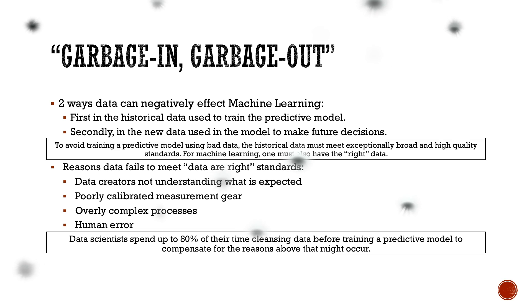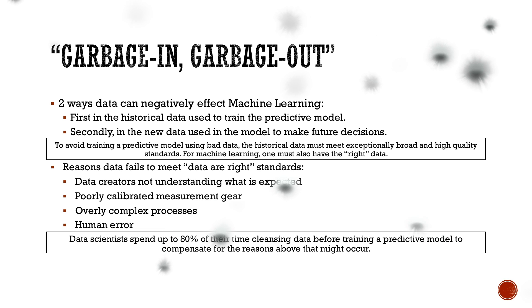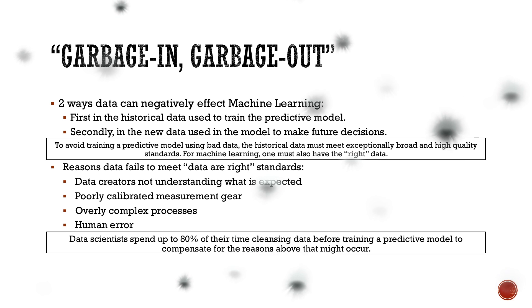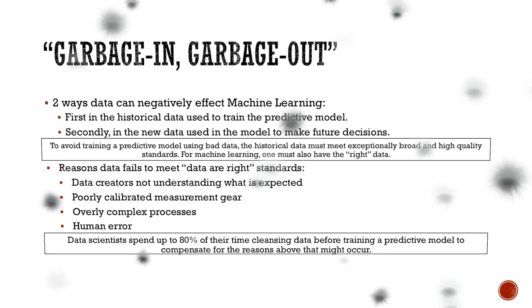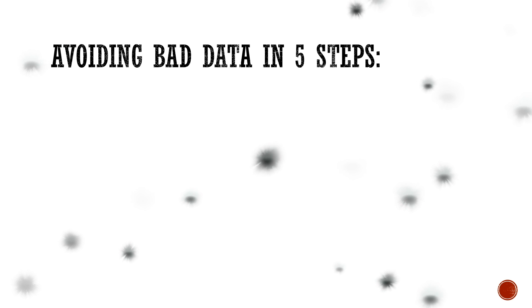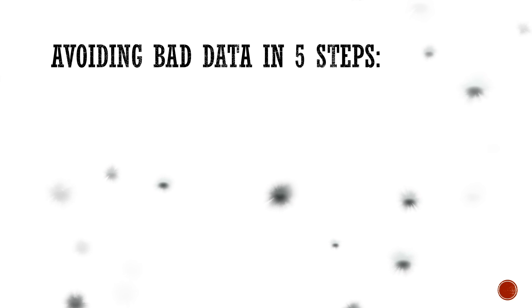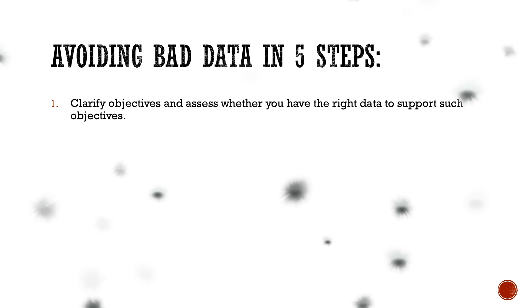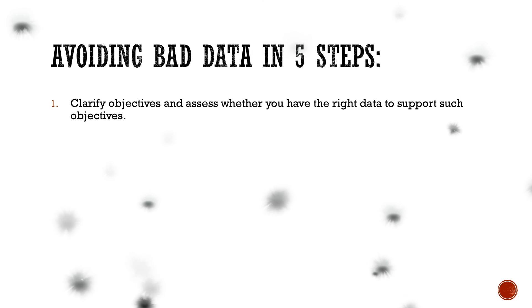And even with all that time-consuming tedious work, not all errors are detected or corrected. An undetected minor error in one predictive model that feeds another model, and another, and so on, can cause unforeseen errors and go from a minor error to a large error across an entire process. To avoid this from happening, five steps should be taken according to Thomas Redman's article. First, clarify objectives and assess whether you have the right data to support such objectives. Ask yourself: does the data fall short of the objective?